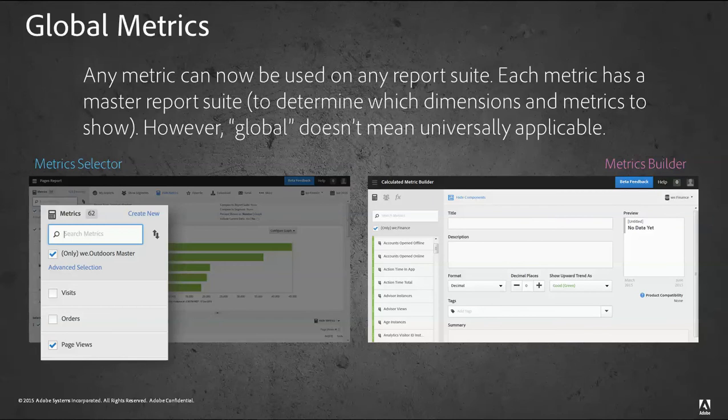When you're selecting metrics, the metric selector will be by default set to the report suite that the user is in. In order to see other global metrics, they actually have to deselect the default setting here, which is the report suite that they were in.